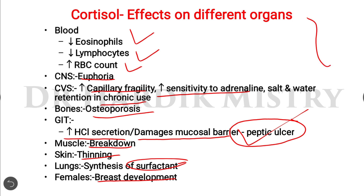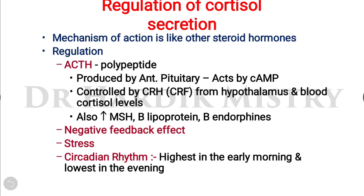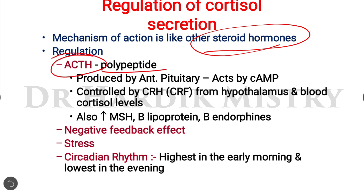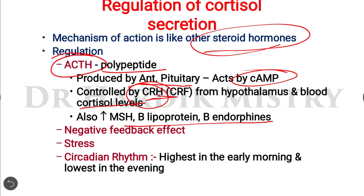The regulation of cortisol secretion: cortisol acts like other steroid hormones. Its regulation is mainly via adrenocorticotropic hormone (ACTH), a polypeptide hormone secreted from the anterior pituitary gland. The anterior pituitary is controlled by hypothalamic releasing and inhibitory hormones — specifically corticotropin-releasing hormone (CRH) from the hypothalamus. ACTH also increases melanocyte-stimulating hormone, beta-lipoprotein, and beta-endorphins. It is regulated by a negative feedback mechanism.